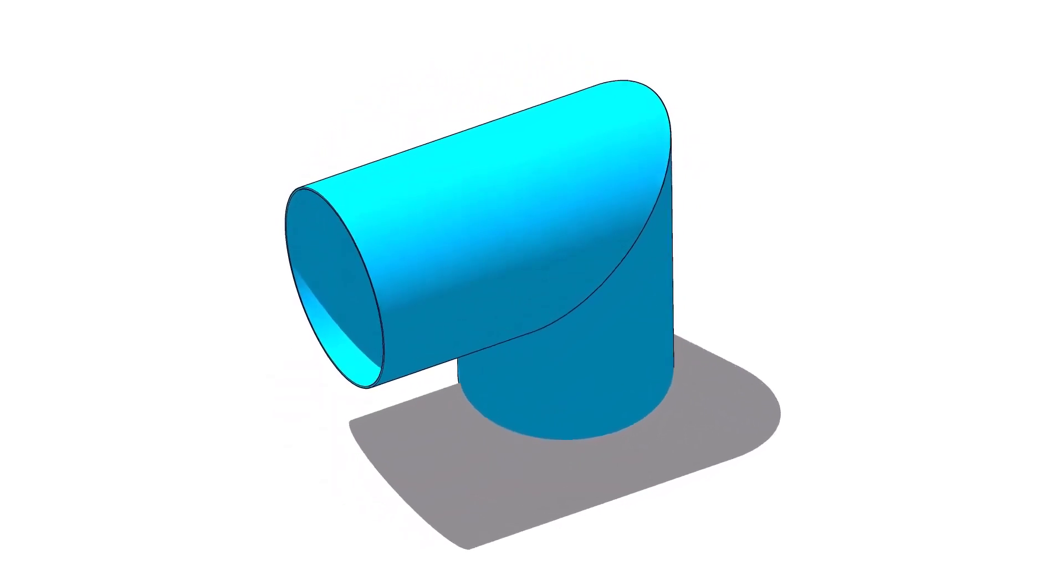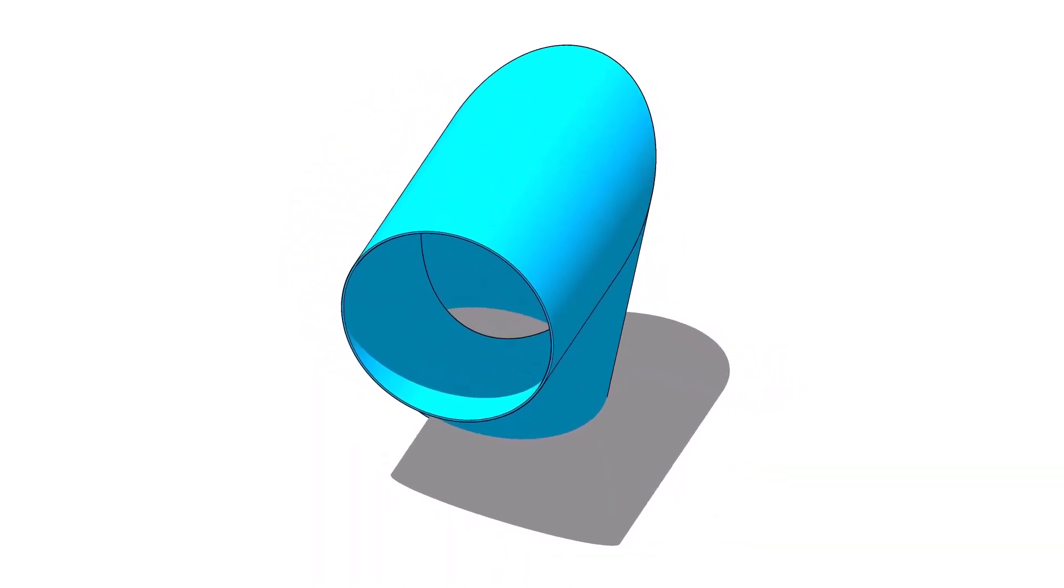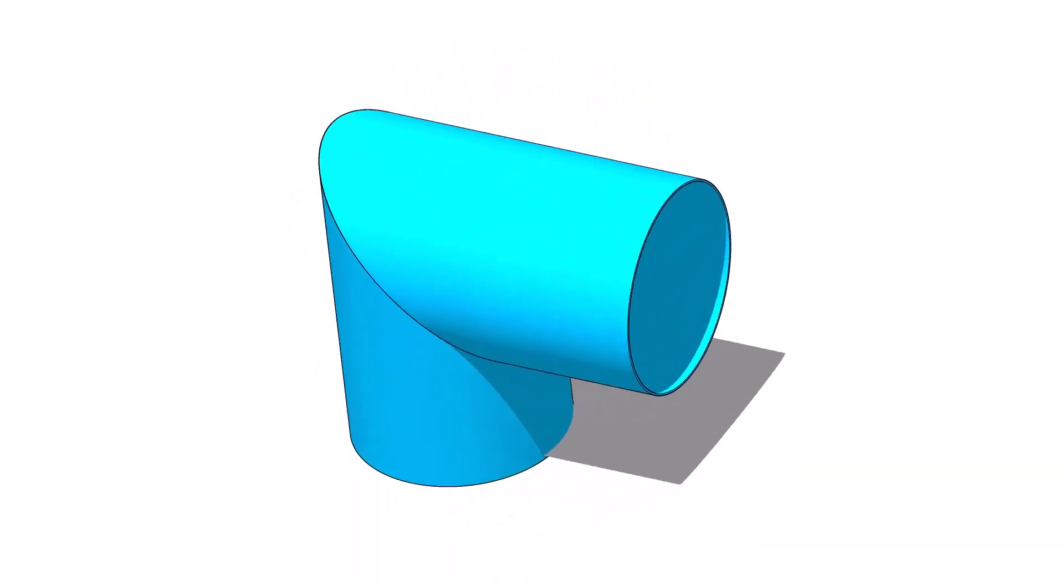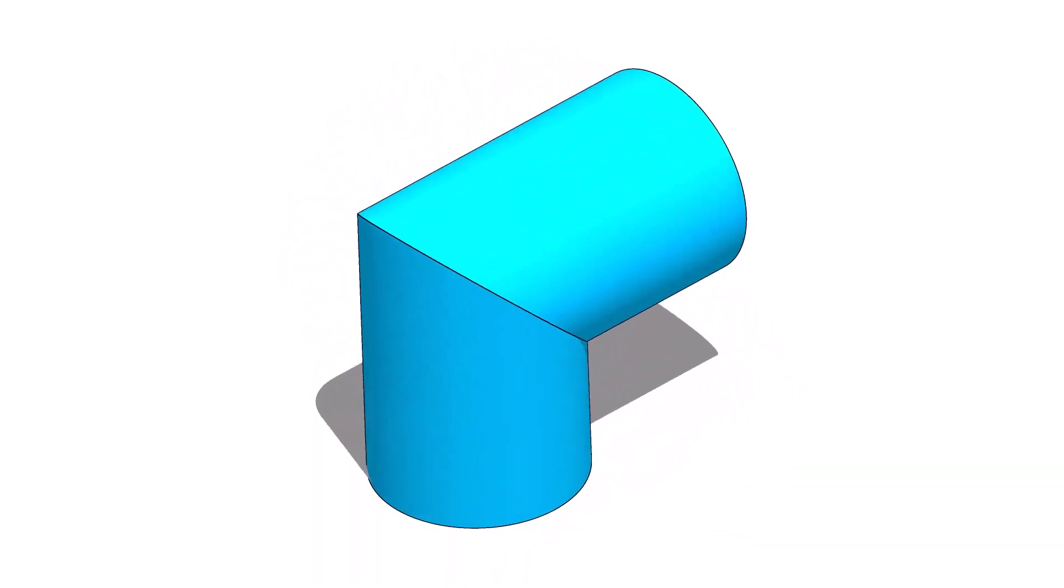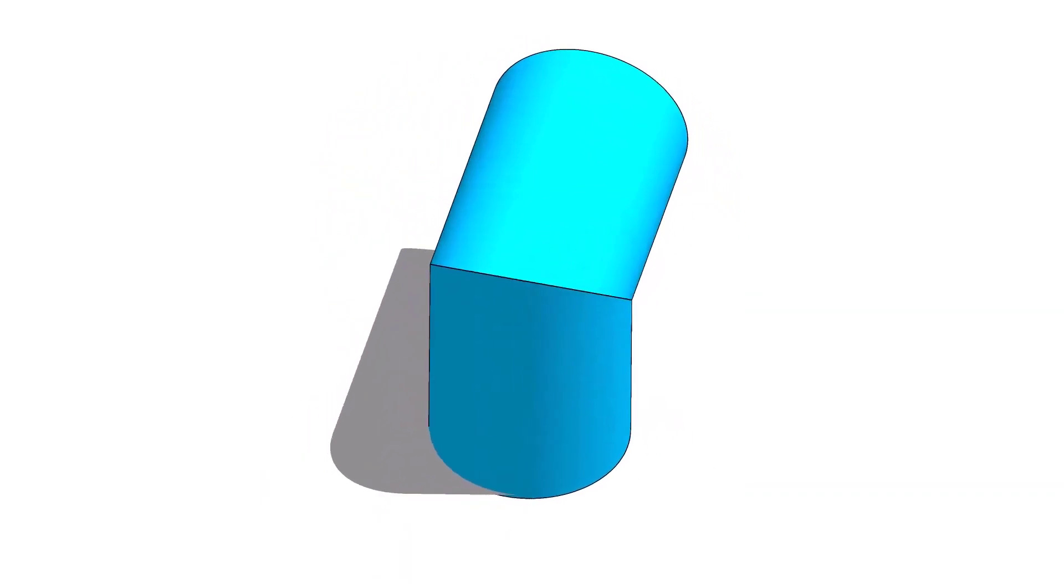Miter bends or miter elbows are very important in piping construction because sometimes the standard elbows cannot be used because of the situation or the high cost of ready-made bends.